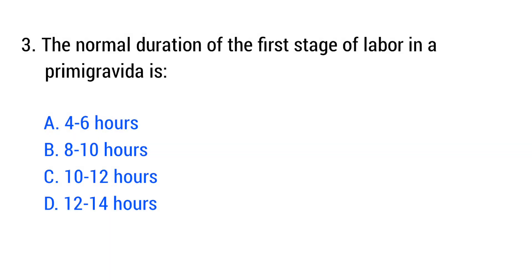Question number three. The normal duration of the first stage of labor in a primigravida is? The right answer is option C: 10 to 12 hours.